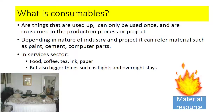Now what are consumables? Consumables are things that you use up, that can only be used once and that are consumed in the production process or project. Depending on the nature of your project and the industry in which you are, consumables can refer to materials such as paint, cement, computer parts, or oil.